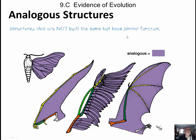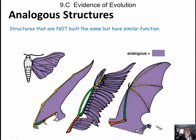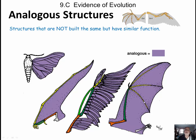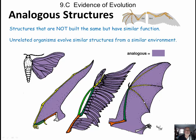Then we have analogous structures. These are structures that are not built the same but have very similar function. You can see a moth — you can tell it's a moth because of the furry body and the type of antenna, not a butterfly. This is the front arm of a dinosaur pterodactyl. Then we have the front wing of a bird and the front wing of a bat, with those five fingers. Analogous structures in bird and bat — unrelated organisms develop similar structures because they live in similar environments and have to fly, swim, or walk.